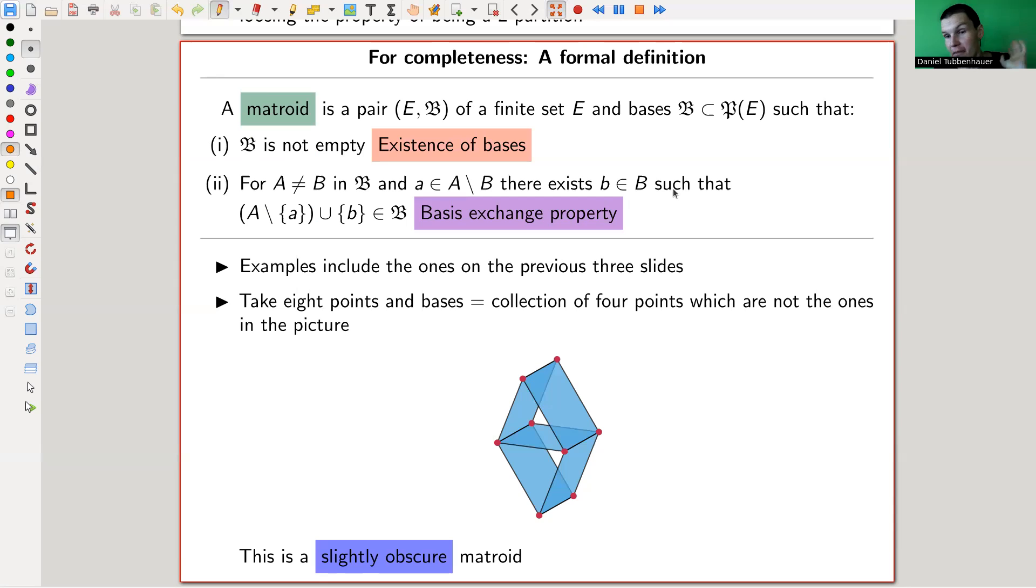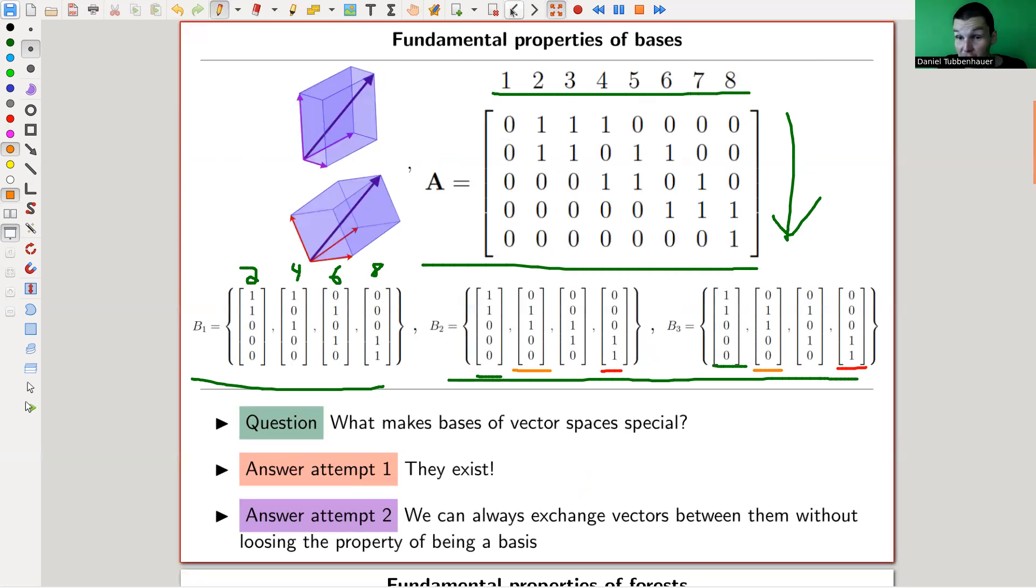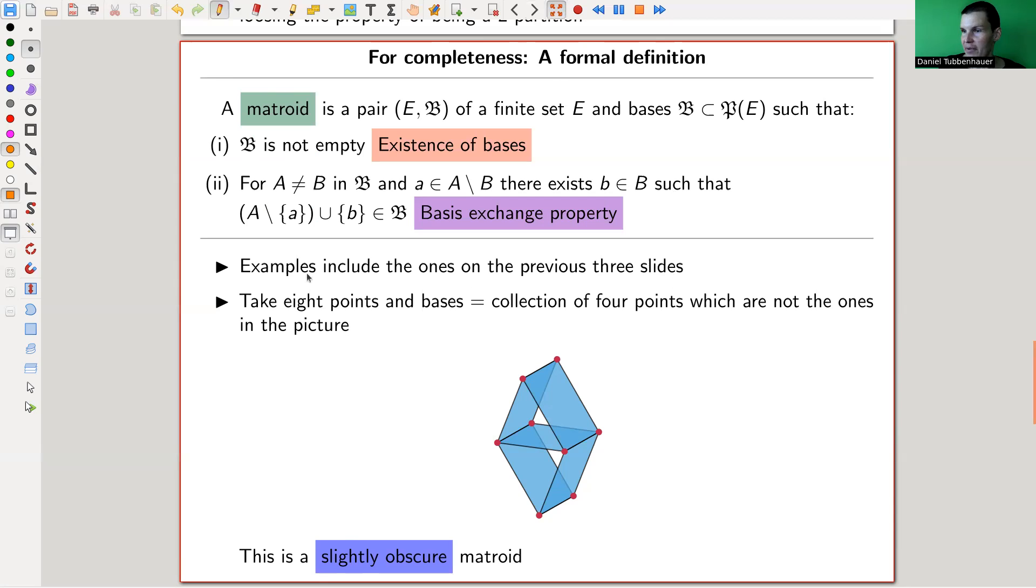In some sense, okay, existence, fine. Otherwise, the story is a bit boring anyway. And the other one is crucial, the basis exchange property, which was a string exchange property, an edge exchange property, and a vector exchange property on my three examples. And obviously, well, otherwise, well, maybe not obviously, but otherwise, my kind of story would be very flawed here. The examples we had before are matroids. But they are slightly more obscure examples. So for example, what you can do is a really slightly obscure matroid. And that's the whole point of this definition. It generalizes something.